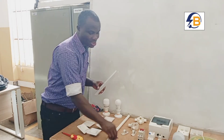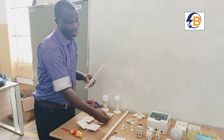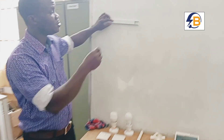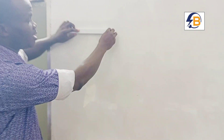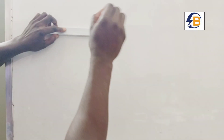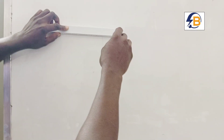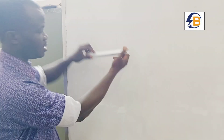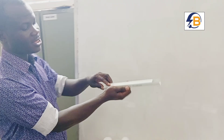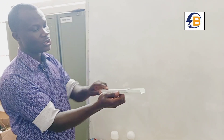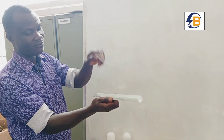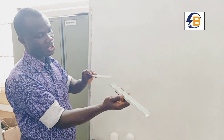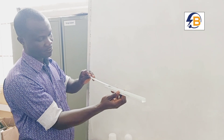When we are using trunking, we use tapping screws to secure the trunking to the mounting surface before our cables are drawn in. The trunking has a cover — you remove the cover, arrange your cables, and then cover it back.